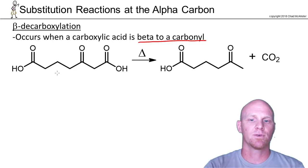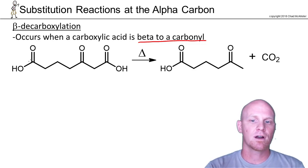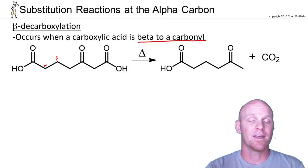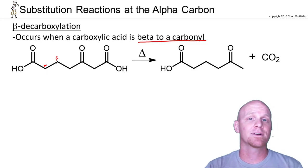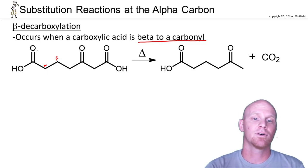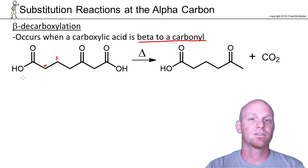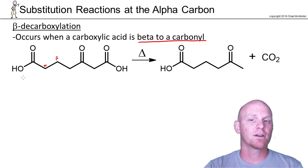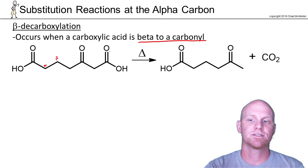If we look at this molecule here, for this carboxylic acid there is its alpha carbon, there's its beta carbon, and that beta carbon does not have a carbonyl. So it turns out that this carboxylic acid is fairly stable and it's not going to decarboxylate in a beta decarboxylation reaction.